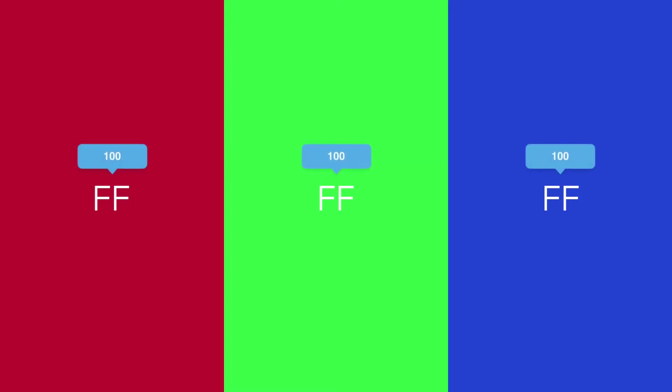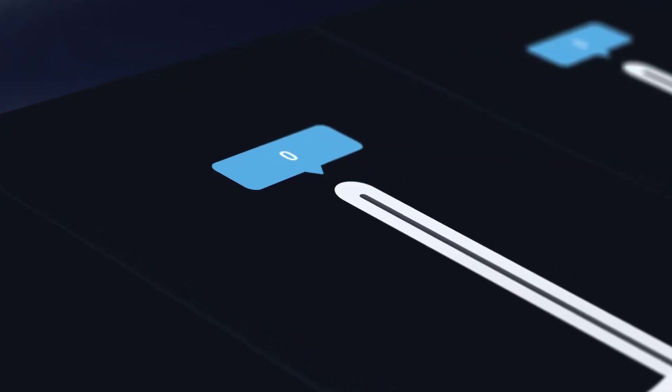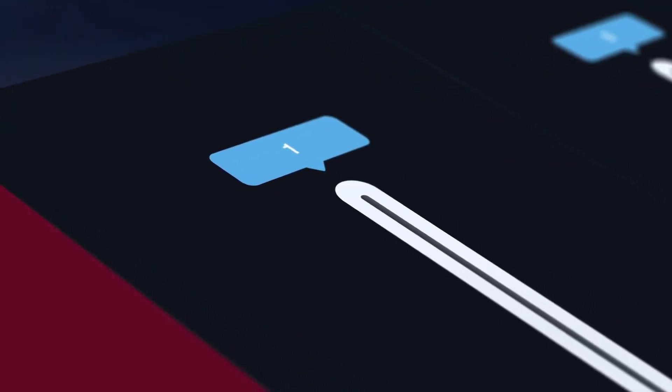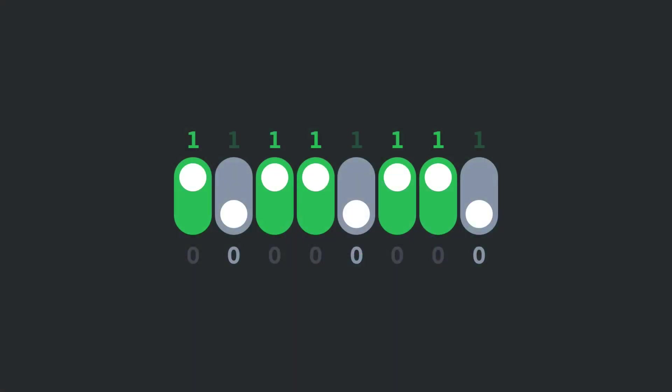It's called a hex code because there are six digits — two for each color channel. The weird thing is that each channel doesn't go from zero to 100 like you'd expect with percentages. That's because each channel actually has 256 levels, from zero up to 255. That number, 256, is actually what 8-bit color means.